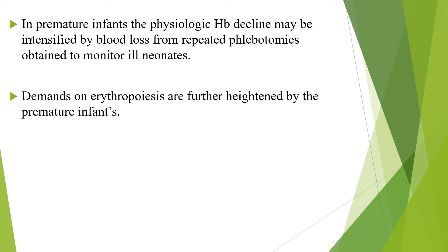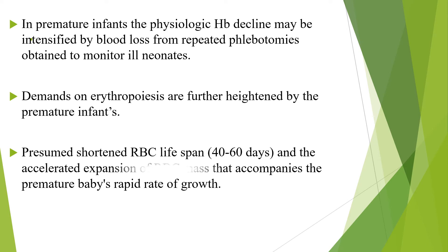Demands on erythropoiesis are further heightened in premature infants by the presumed shortened RBC lifespan, which is 40 to 60 days in premature babies, and the accelerated expansion of RBC mass that accompanies the premature baby's rapid rate of growth — all predisposing to physiologic anemia of prematurity.